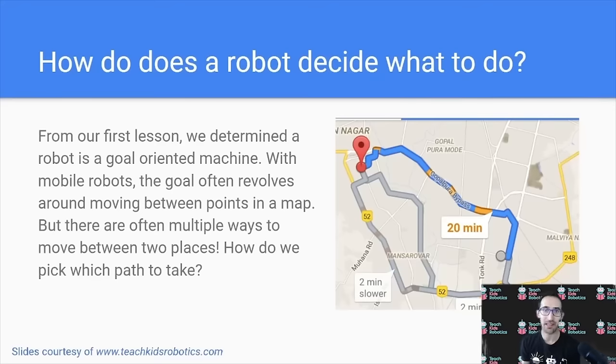So how does a robot decide what to do? From our first lesson, we determine a robot is a goal-oriented machine. And with mobile robots, the goal often revolves around moving between points in a map. But there are often multiple ways to move between two places. So how do we pick which path to take? Consider for example if you've used Google Maps, and you can see there are multiple routes getting you from a starting location to your destination. How do you determine which one of these routes is best?